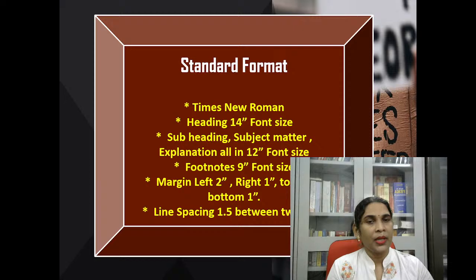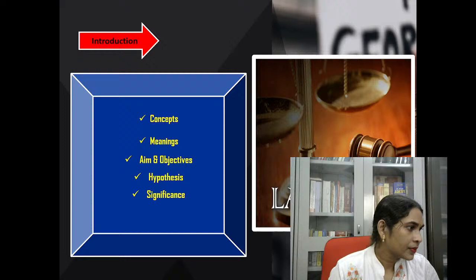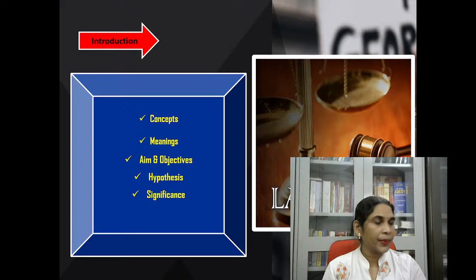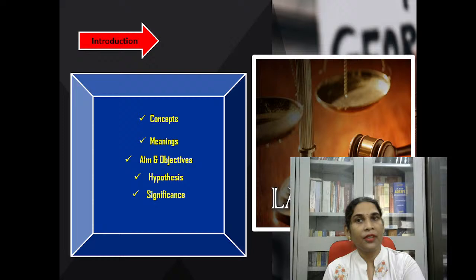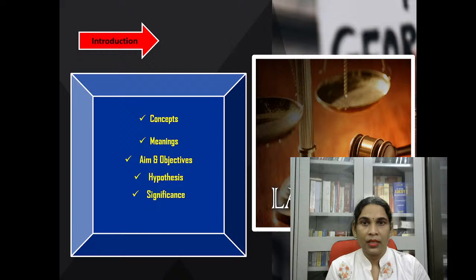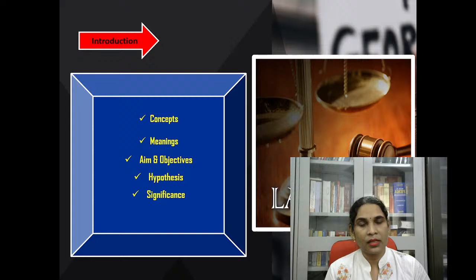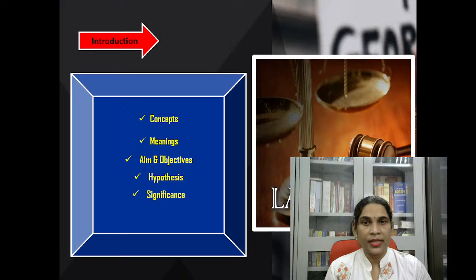Now for the introduction: as per the law topic, since all of you are law students doing this constitution group practical component, you can choose any topic as per your comfort. I approve maximum topics and accordingly you can start in a systematic way — first one is the concept, then the meaning, then what are the aims and objectives, hypothesis, and significance. All of these you discuss in your practical component, and every point must be related to your chosen topic.